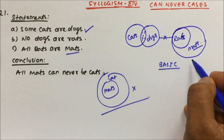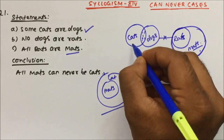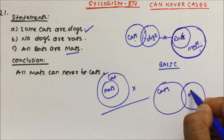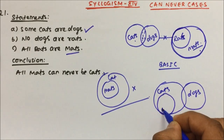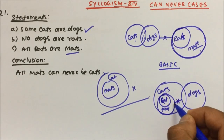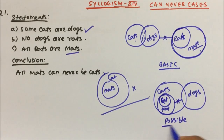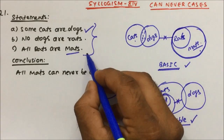So where are the mats? Mats is here. So if it is possible to bring all the mats inside the cat, let's see. This is cat, and this is dog. I am drawing the diagram again. This is mat and this is rat. They are telling no dogs are rat, so dogs and rat have no relation. So this is a possible diagram I am making. Whenever we make a possible diagram we have to be very careful that your statement should not get violated.